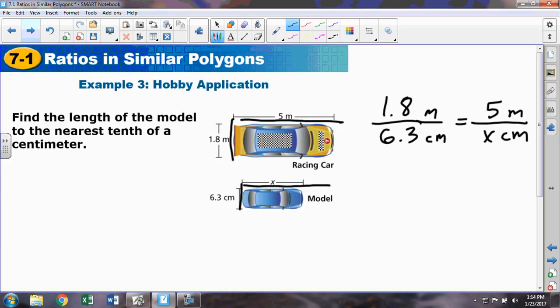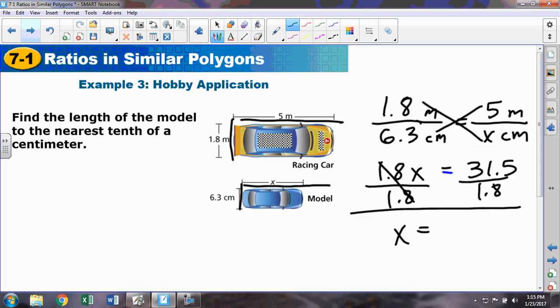This is one of the many different correct ways to build a proportion. And we know cross multiplication. 1.8 times x. 6.3 multiplied by 5. That's 31.5. And if we divide out to solve, 31.5 divided by 1.8. 17.5. You grab your calculators and verify, that's 17.5 centimeters. And we're done. This little model race car had to be 17.5 centimeters long to look like the real thing.